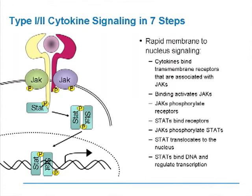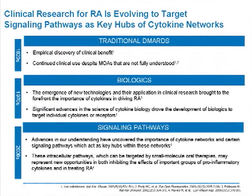These STATs bind to the receptors and are phosphorylated, dimerize, and are translocated to the nucleus where they bind to DNA and regulate the transcription of whatever programs are linked to that particular cytokine. Obviously, IL-6 will lead to CRP production and other acute phase reactants, while interferons will regulate a different program of resultant proteins.